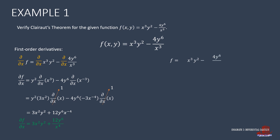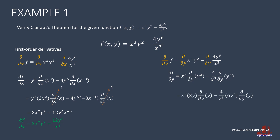For the partial derivative of the function with respect to y, we simplify as x cubed times the derivative of y squared, minus the constant 4 over x cubed times the derivative of y raised to 6. Since dy over dy is 1, the partial derivative of f with respect to y is 2x cubed times y minus 24y raised to 5 over x cubed.